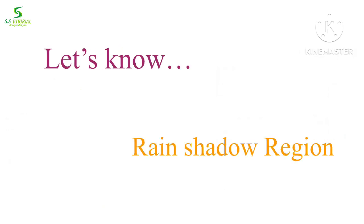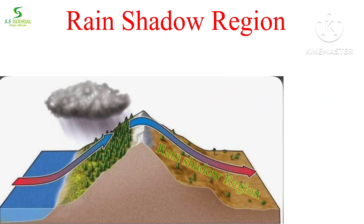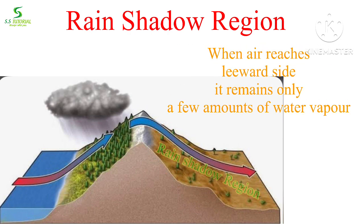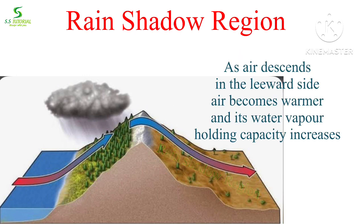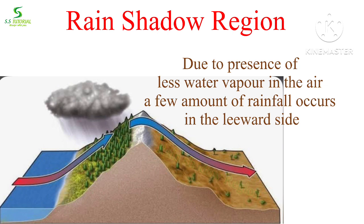Let's know about the rain shadow region. After heavy rainfall on the windward side of the mountain, air loses maximum water vapour. When air reaches the lower side of the mountain, only a small amount of water vapour remains — that means it becomes dry. As air descends on the lower side, it warms up adiabatically and its water vapour holding capacity increases. So due to less water vapour in the descending air and increased holding capacity, very little rainfall occurs on the leeward side, forming the rain shadow region.